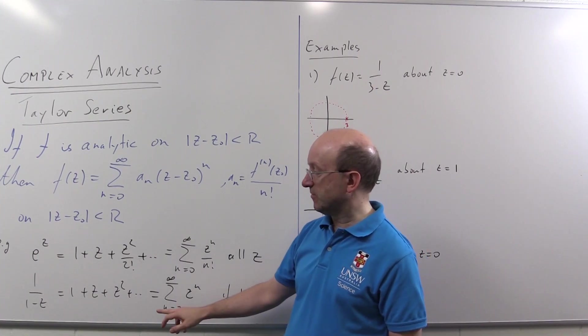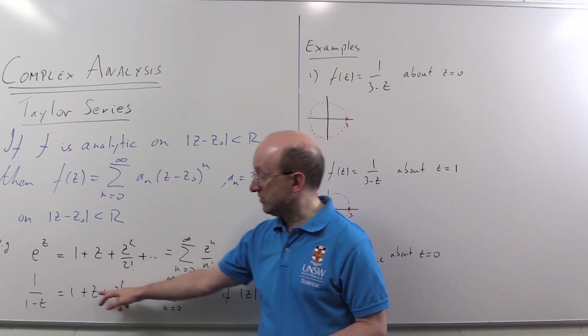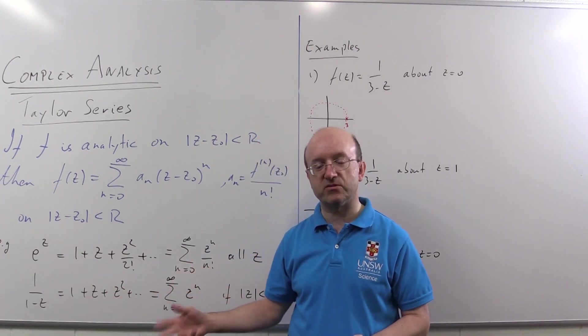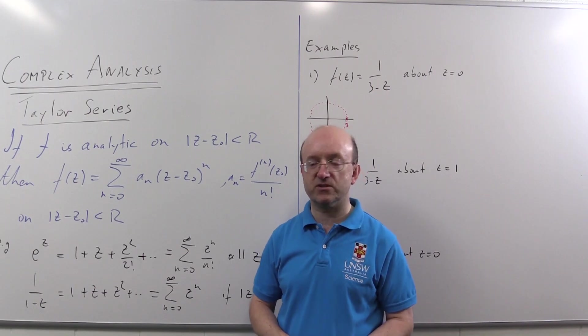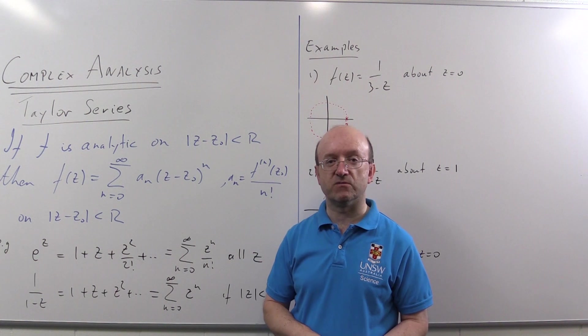And similarly here, for one over one minus z, if we wanted the series for one over one minus z all squared, we'd just differentiate this thing term by term. That term would go, we'd get one plus two z plus three z squared and so on. And that would be the power series for one over one minus z squared, which would converge if mod z is strictly less than one.